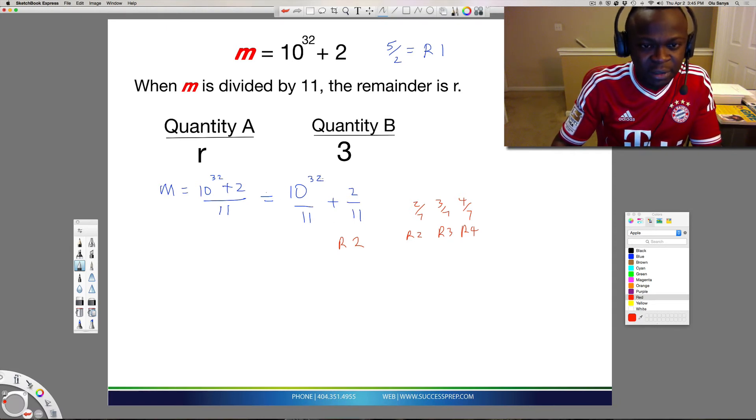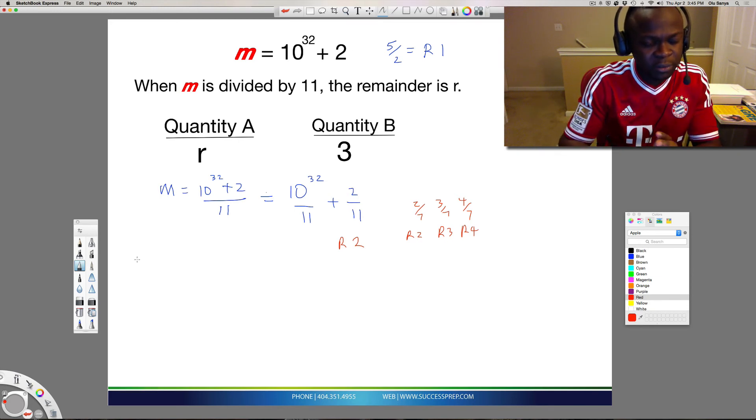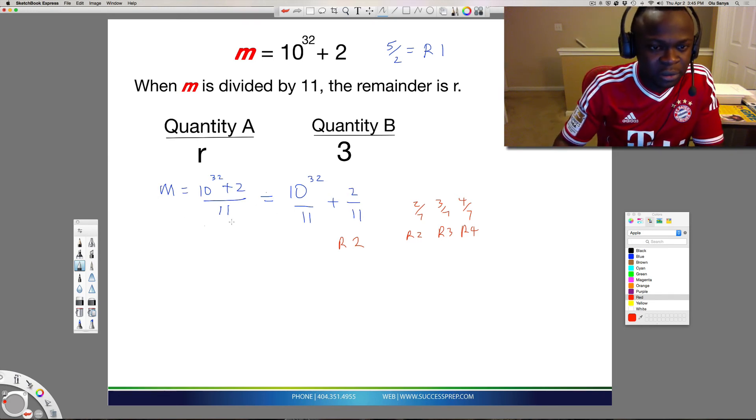So let's look at this part, the 10 to the 32 over 11. There is an idea there that one of the things I do in math is if I see a big complicated situation, I try to look at a smaller subset case, a smaller case that I can handle. See if there's a pattern, then bring it up to the big situation.